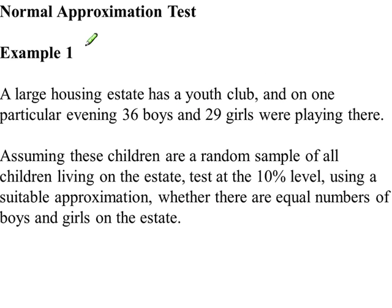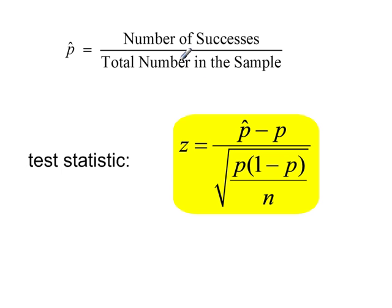Example 1. On this large housing estate in this youth club there were 36 boys and 29 girls. So that's a total of 65. That's the sample size. That's the value that goes here, the total number in the sample, and here n.